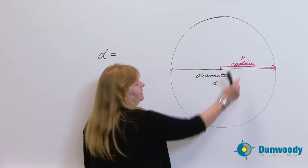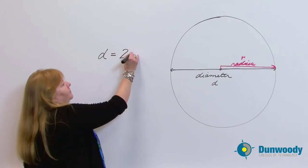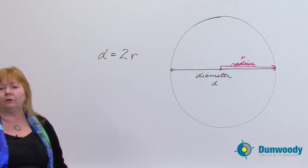You have two radiuses here. So another way to talk about diameter is two times the radius. So two times the radius or two radiuses equals diameter.